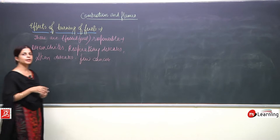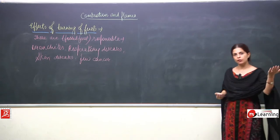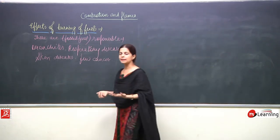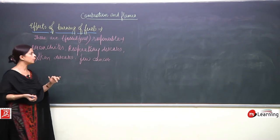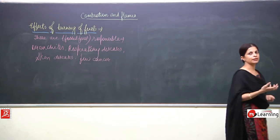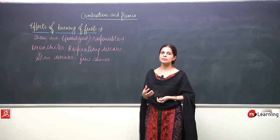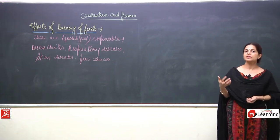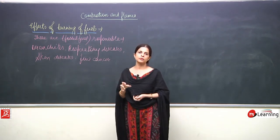So all these are the effects of burning fossil fuels. First, the effect of carbon dioxide which leads to global warming. Second, carbon monoxide and carbon monoxide poisoning — how it combines with haemoglobin and does not allow oxygen to be transported in the body. Third, the oxides are released which are responsible for acid rain. And the last one is how these are responsible for various diseases in humans — respiratory diseases, bronchitis, skin diseases, and even some cancers — all because of pollution.